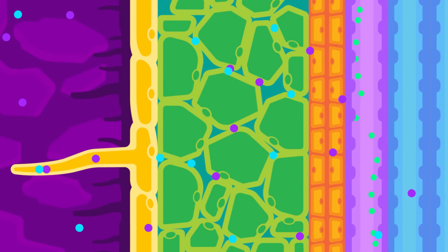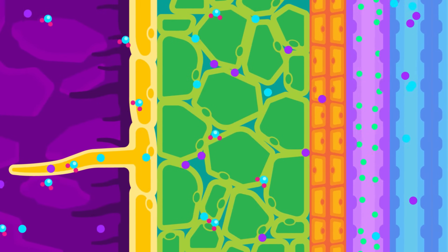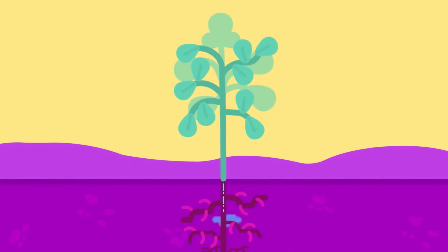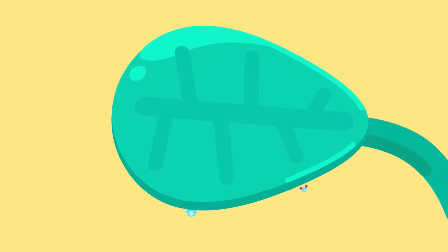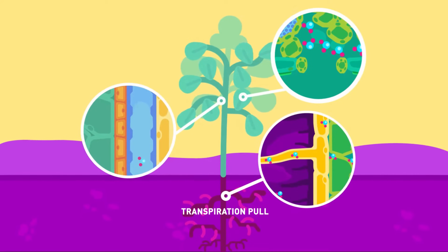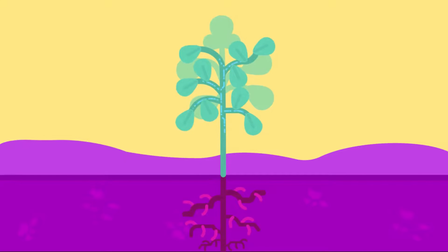Plants rely on the movement of water through transpiration to carry minerals from the roots to the other cells within the plant. Transpiration is caused by the evaporation of water in the leaf and the diffusion of this water vapor from the leaf, which pulls the water up the xylem. The environment influences the rate of transpiration, and plants are adapted to their environment to help manage their rate of transpiration.